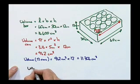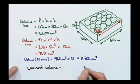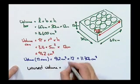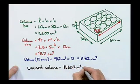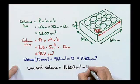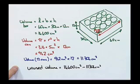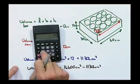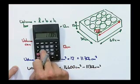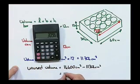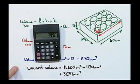It follows then that the unused volume is equal to the volume of the box minus the volume of all of the cans together, which gives us 3,096 centimeters cubed.